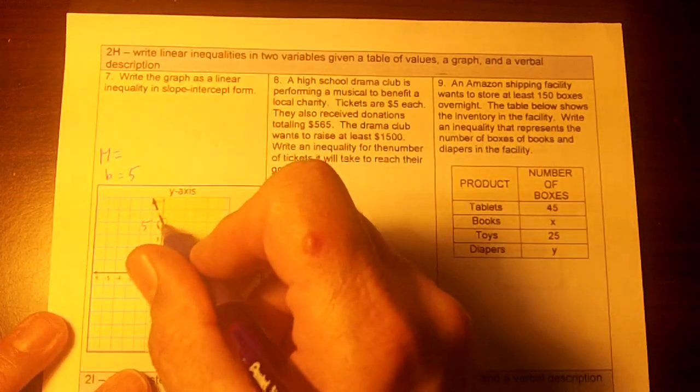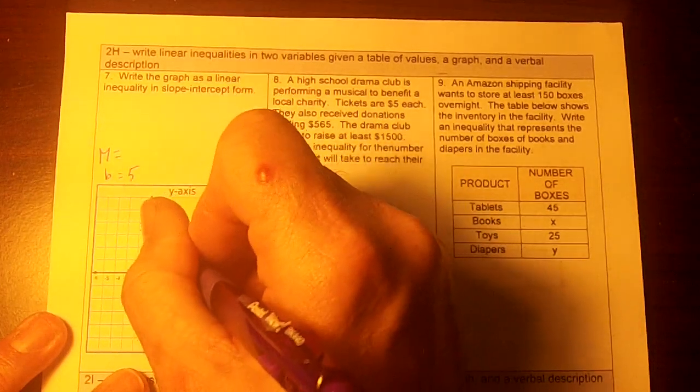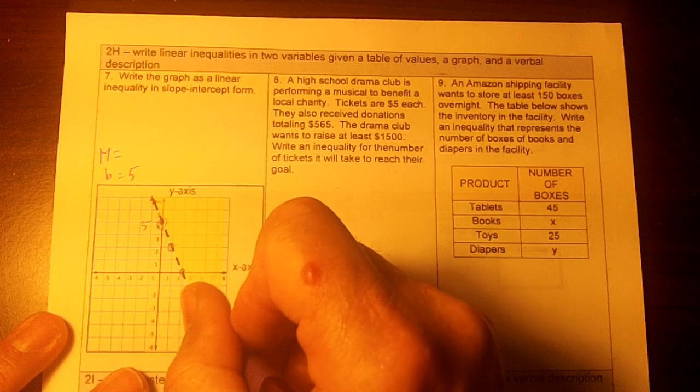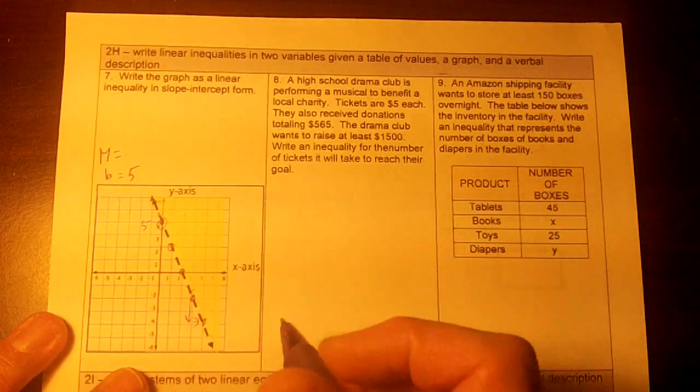And my slope, if I put tick marks on the line, here, here, here. So my slope is down 2 over 1, isn't it?